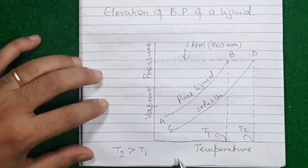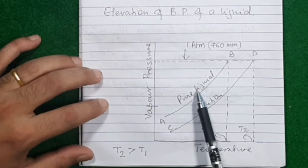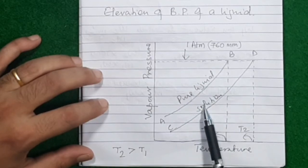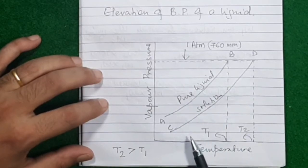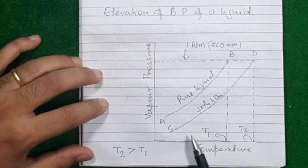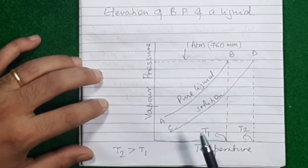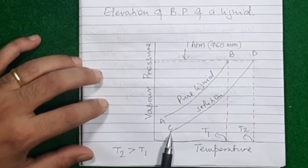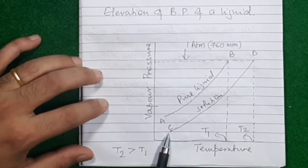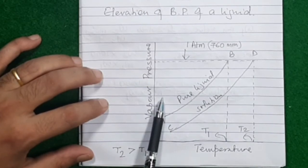Now I will prepare a solution by adding a non-volatile, non-electrolyte solute using the same liquid. When you prepare a solution, because you have added impurities, the vapor pressure of the liquid will go down. So the vapor pressure-temperature curve of the solution will start from a lower end.